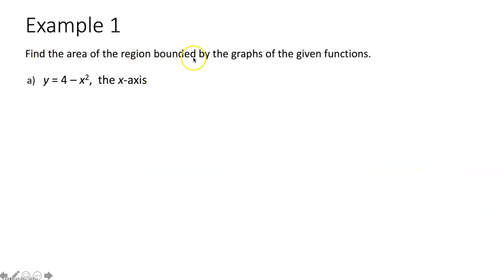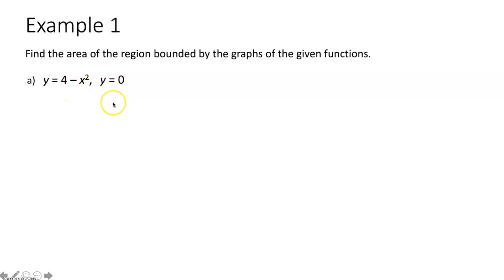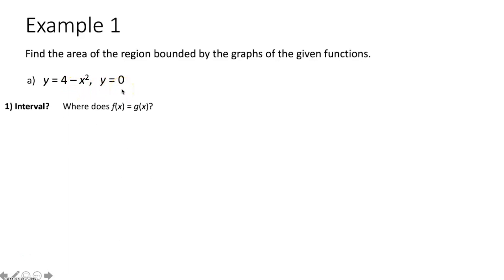Example one: find the area of the region bounded by the graphs of our given functions. We have y = 4 - x² and the x-axis, y = 0. In order to find the area between two functions on a given interval, we need to first figure out what our interval is. Because they don't give us an interval, it's going to be where these two functions intersect one another. So we have to set these two functions equal to one another to solve for x and determine the x values at which they intersect.